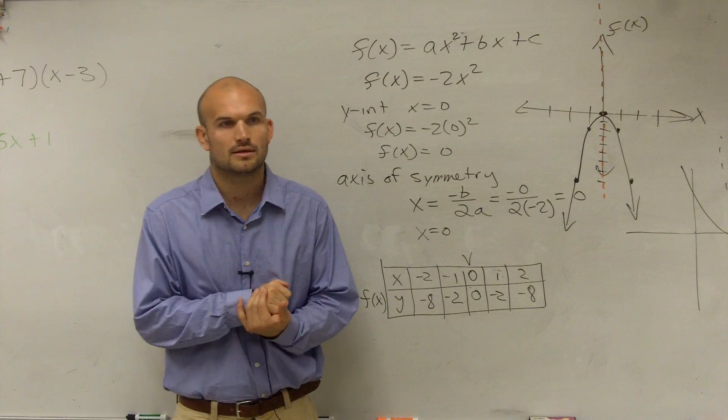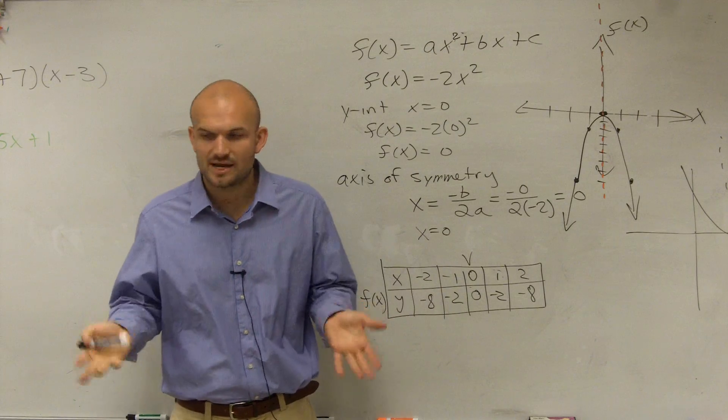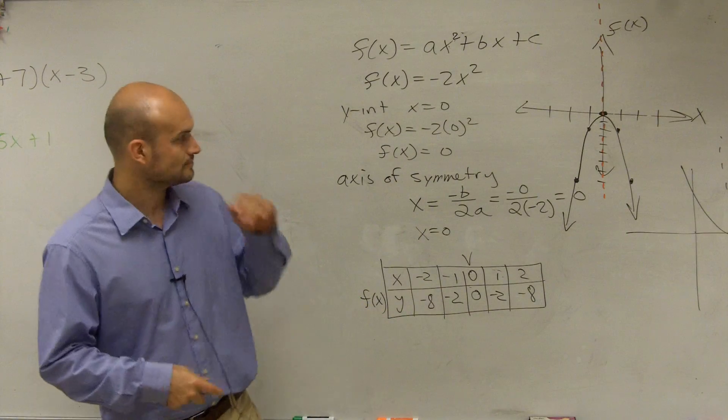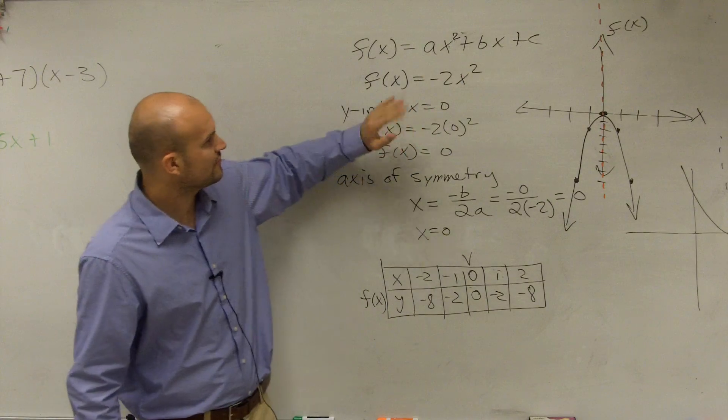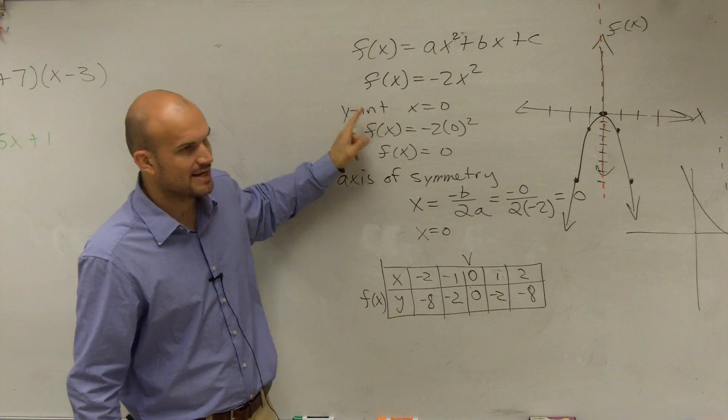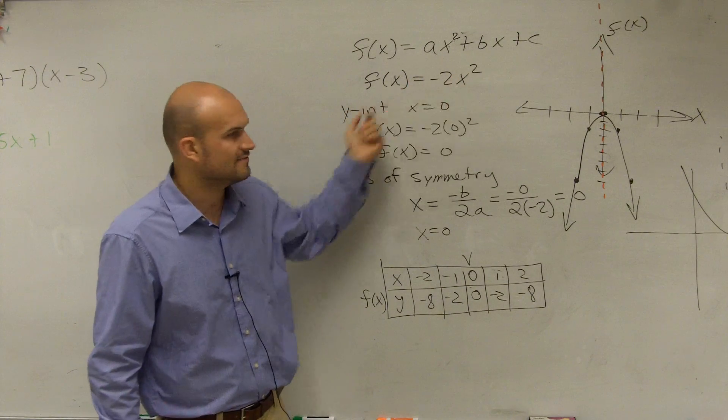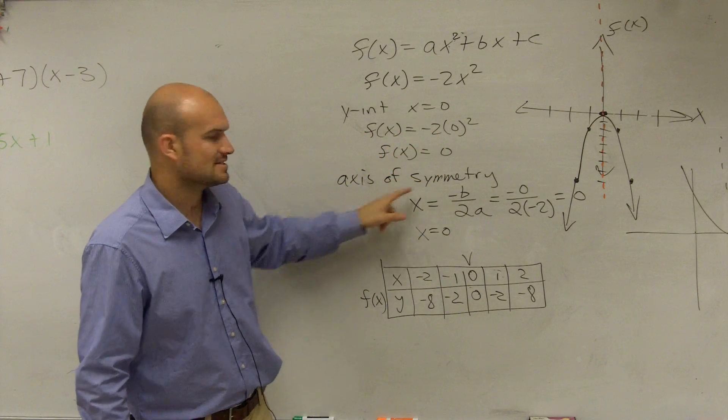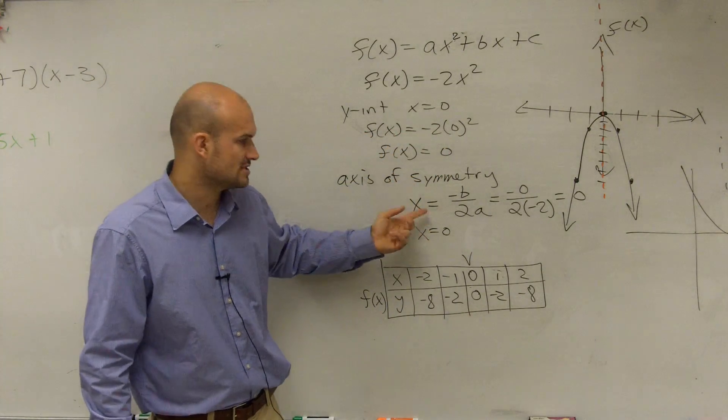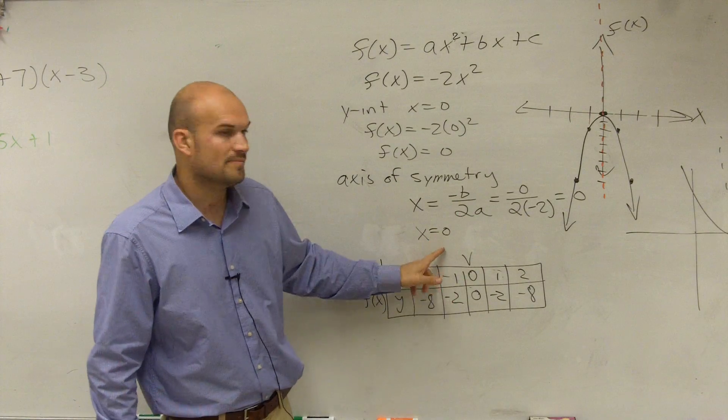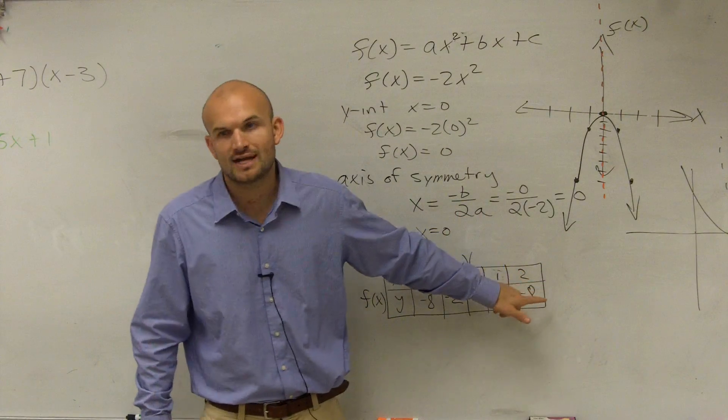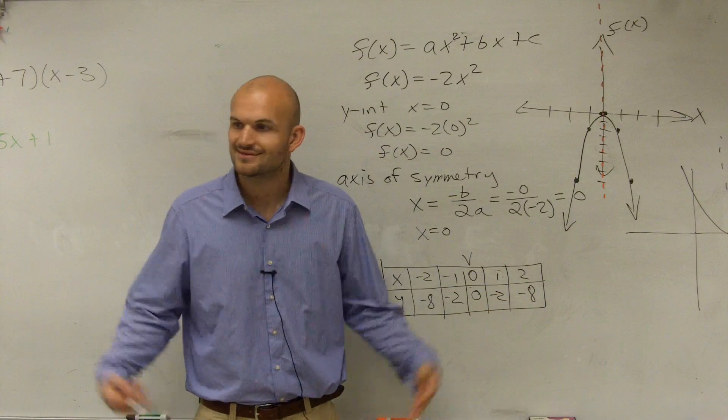Questions? All right. So ladies and gentlemen, the main important thing when doing this, when looking and graphing, what you want to do is make sure first find the y-intercept, which is pretty basic. Just plug 0 in for x and evaluate. Then find the axis of symmetry or the x value of your vertex. Then from that point, pick two points to the left and two points to the right to evaluate for your table of values. And then you're done.